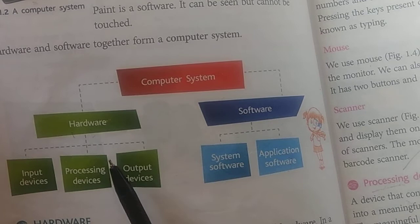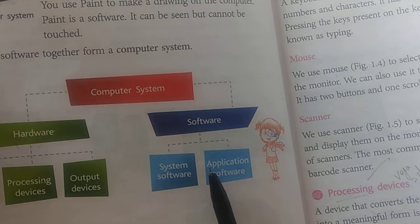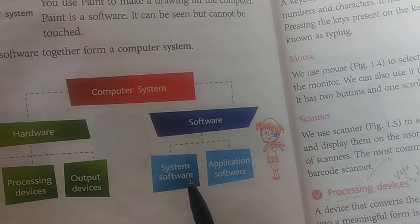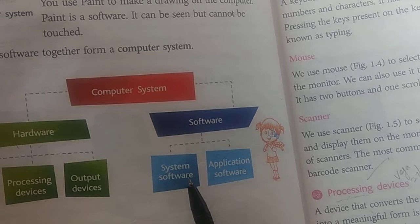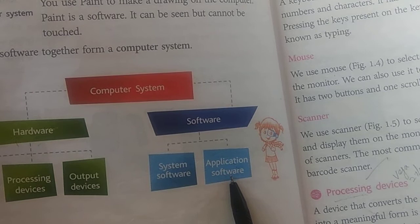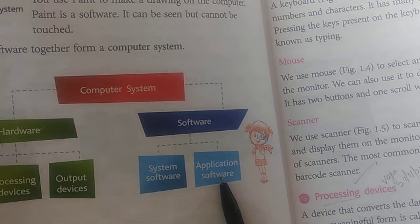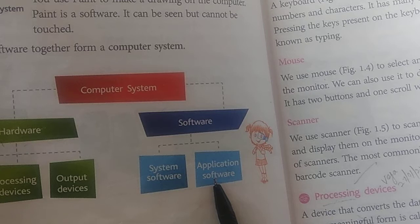And software - there are two types of software. System software is used to operate the system. As long as you are working on the computer, the computer should start properly, work properly, not hang, and have no problem running any software - that is system software. In application software, all programs used to perform a specific task are application software. For example, if you need to make a presentation, you will use PowerPoint. If you need to type a letter or document, you will use MS Word. And if you have to draw something, you will use MS Paint. So to perform any specific task, we use application software.